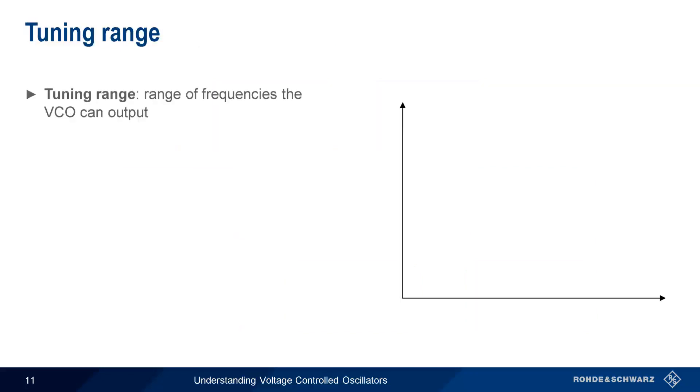Let's start with tuning range, the most fundamental characteristic of a VCO. Tuning range is the difference between the minimum and maximum VCO output frequencies. We determine this by sweeping the tuning voltage and measuring the output frequency. In this example,